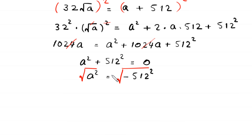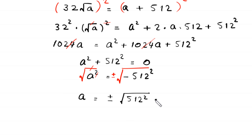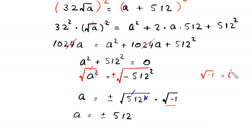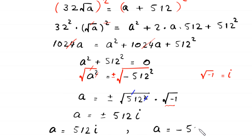Taking the square root of both sides: a = ±√(-512²) = ±512·√(-1) = ±512i. So we get two values of a: a = 512i and a = -512i.